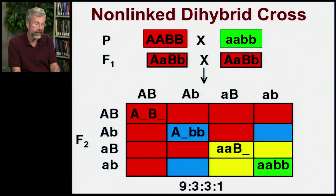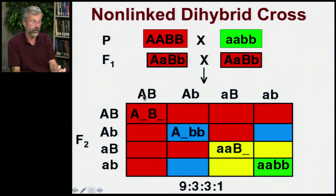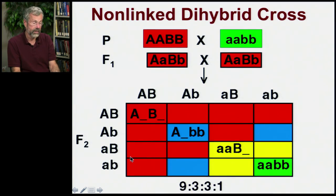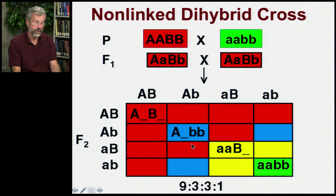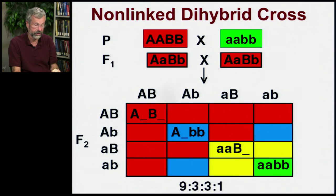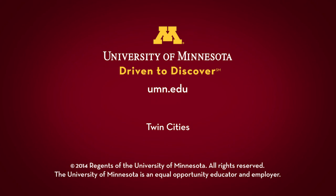That's in contrast to the unlinked dihybrid cross. In that case, because they're on separate chromosomes, the capital A allele is just as likely to be with the capital B allele as with the little b allele — this goes back to independent assortment. You get 16 combinations and the ratio of phenotypes is 9 to 3 to 3 to 1, instead of 3 to 1 if they were completely and perfectly linked.